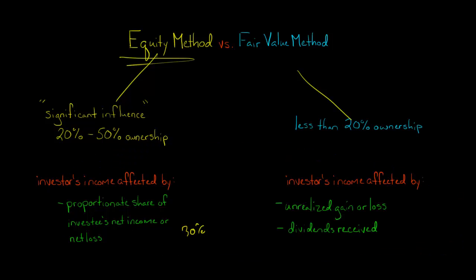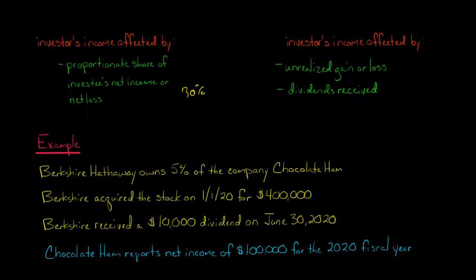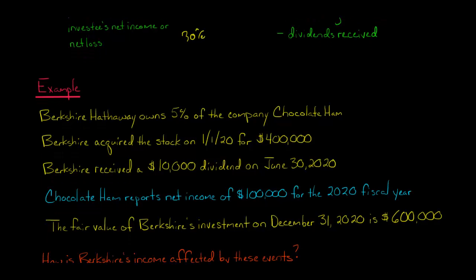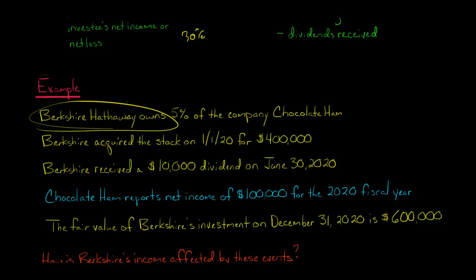Let's say Berkshire Hathaway owns 5% of a company called Chocolate Ham. Berkshire acquired the stock on January 1st, 2020 for $400,000. They received a dividend of $10,000 on June 30th, 2020. Chocolate Ham reported net income of $100,000 for the year ended December 31st, 2020. And the fair value of Berkshire's investment in Chocolate Ham on December 31st, 2020 is $600,000. We'll figure out how Berkshire Hathaway's profit is going to be affected by all these things.